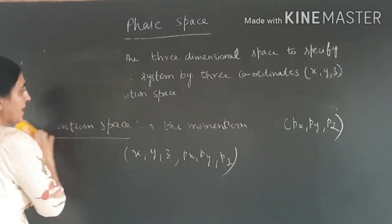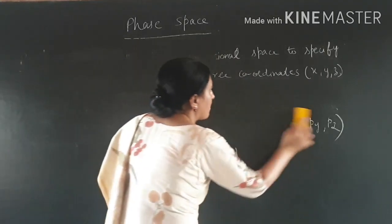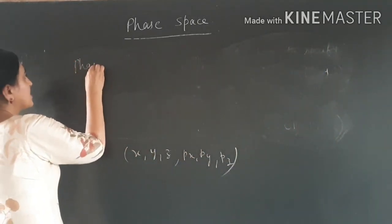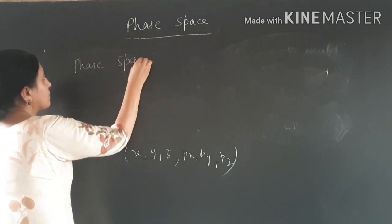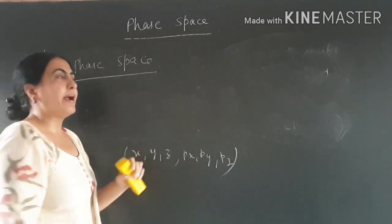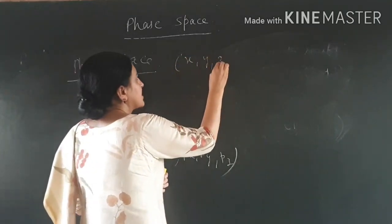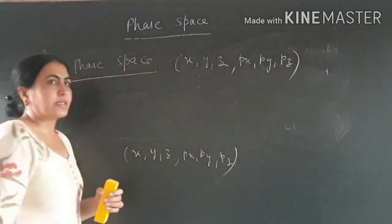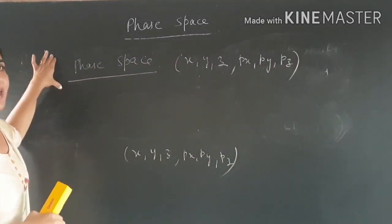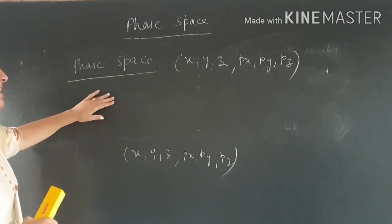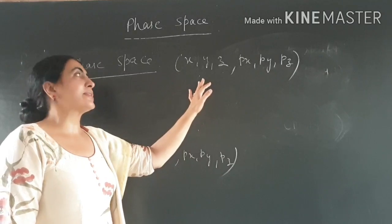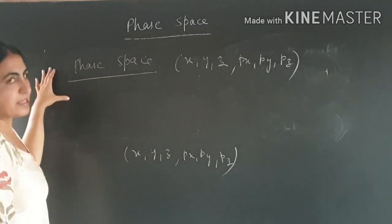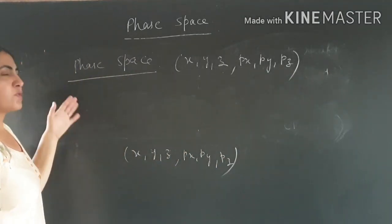When position space and momentum space combine, they form a phase space. In phase space we have both position coordinates and momentum coordinates, giving us six coordinates: X, Y, Z, Px, Py, and Pz. Phase space is the space represented by these six coordinates, and it is also called MU space.